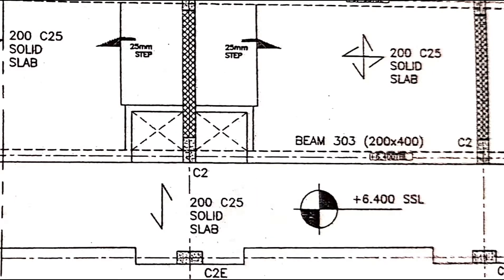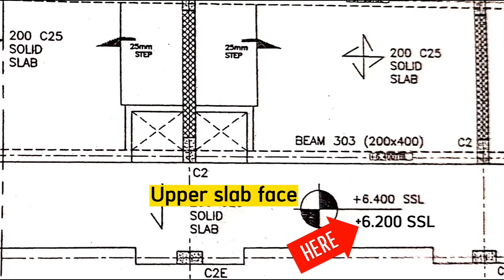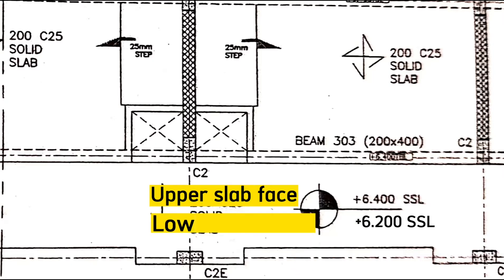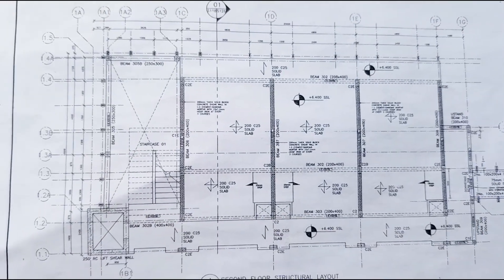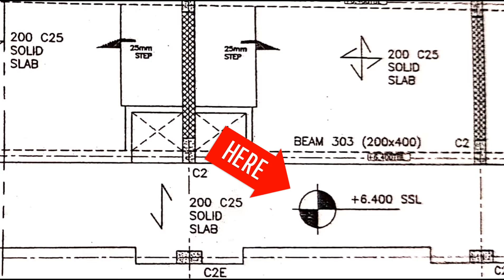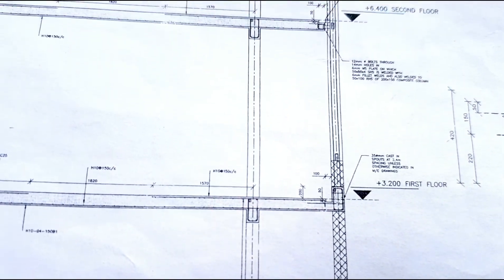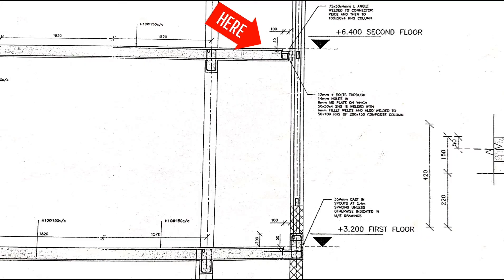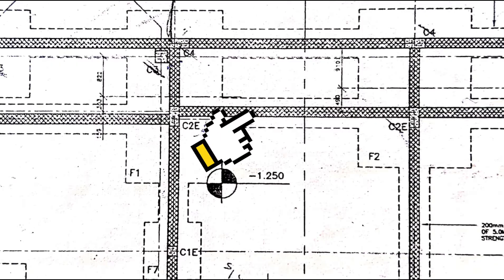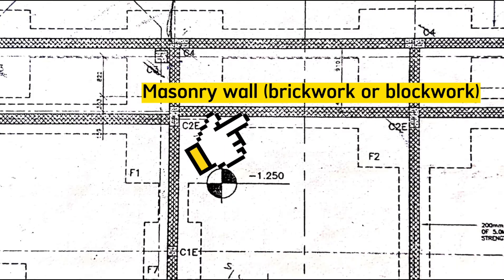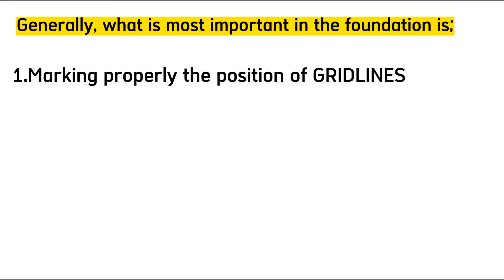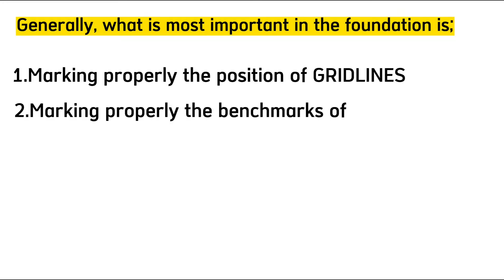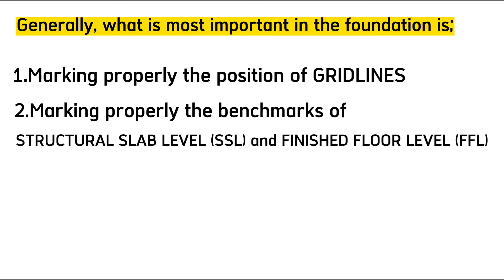This symbol means levels. When a figure is written above the symbol, it shows the level or height of the upper slab face, and when written below, it shows the level of the lower slab face. When seen from above, it shows that the second floor structure slab level is at 6.4 meters from the ground floor; when seen from the side, the upper slab face is at 6.4 meters from the ground structure slab level. This is the symbol for block work, and since we are in the foundation, this will be the plinth wall.